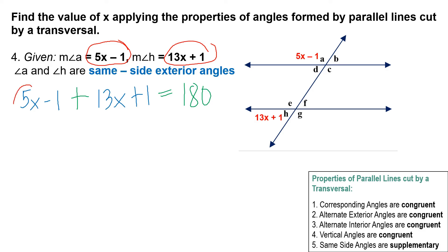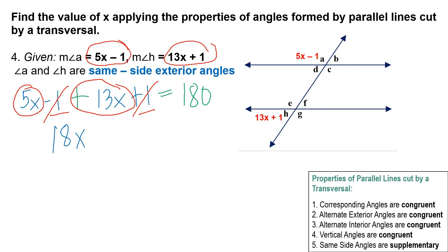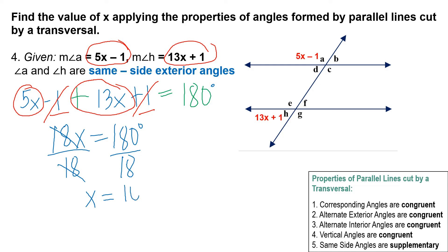Combining like terms: 5x plus 13x equals 18x, and negative 1 plus 1 equals 0, so those cancel out. We have 18x equals 180. Dividing both sides by 18, x equals 10.